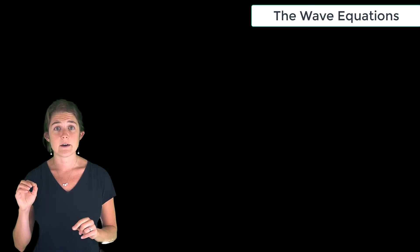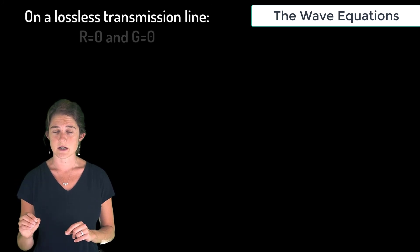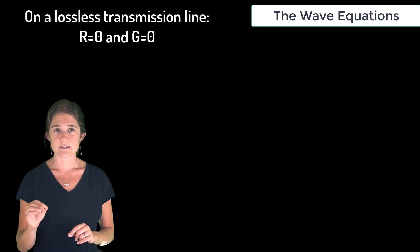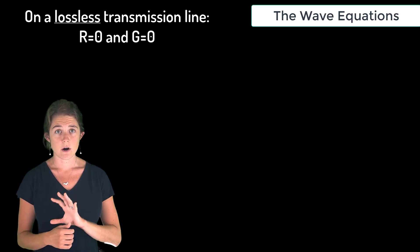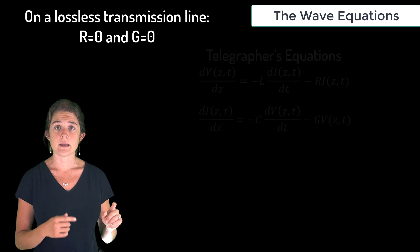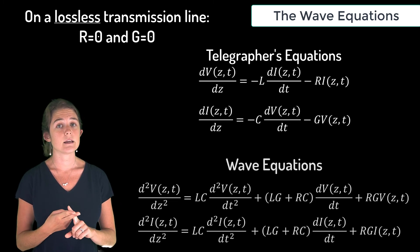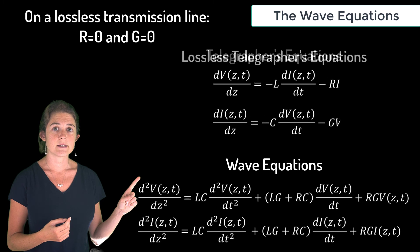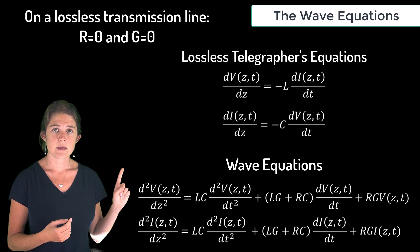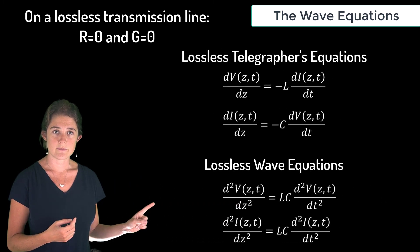I want to take a moment here to point out that on a lossless transmission line, the series resistance and the shunt conductance both go to zero. So R and G are both zero in the telegraphers equations and in the wave equations, leaving these lossless telegraphers equations and these lossless wave equations.